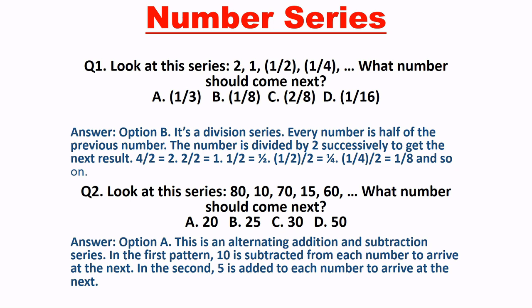Now look at question number two. Is example mein question diya hua hai: look at the series — 80, 10, 70, 15, 60. What number should come next? Ab agar aap yahaan par dhyan se dhekhte ho, toh this is an alternating addition and subtraction series. Jahaan par alternate numbers ke saath addition or subtraction kiya ja raha hai. In the first pattern, 10 is subtracted from each number. In the second pattern, 5 is added to each number. Aur second pattern mein 5 add kiya ja raha hai har ek number pe. Toh is prakar se, yahaan par option A is the correct option, that is number 20.